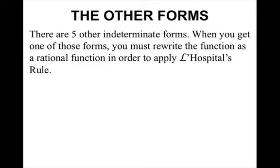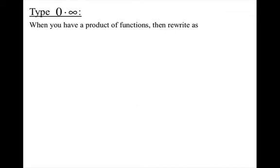There are other forms of indeterminate forms. When you get one of these forms, you have to rewrite the function as a rational function (a single fraction) to apply L'Hopital's Rule. The other forms are: 0 times infinity, infinity minus infinity, 0 to the 0 power, infinity to the 0 power, and 1 to the infinite power. For a product (0·∞), rewrite it as f over (1/g), which equals f over g^(negative 1).